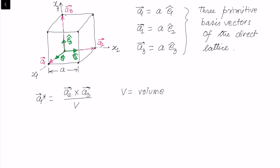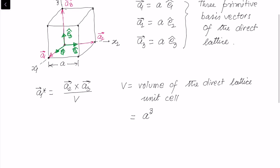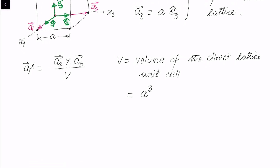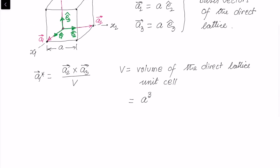Here, v is the volume of the direct lattice unit cell, which in this case is a cube, so v equals a cubed.